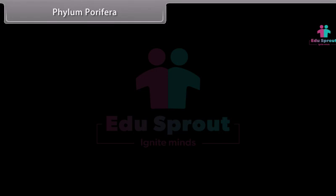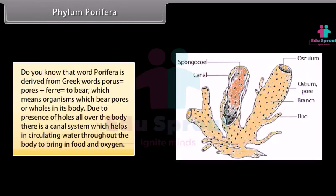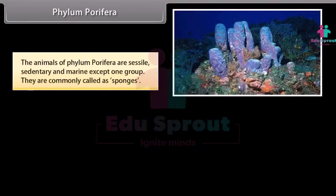Phylum Porifera. The word Porifera is derived from Greek words: porous, meaning pores, plus pherae, meaning to bear — organisms which bear pores or holes in their body. Due to the presence of holes all over the body, there is a canal system which helps in circulating water throughout the body to bring in food and oxygen. The animals of Phylum Porifera are sessile, sedentary, and marine except one group. They are commonly called sponges.